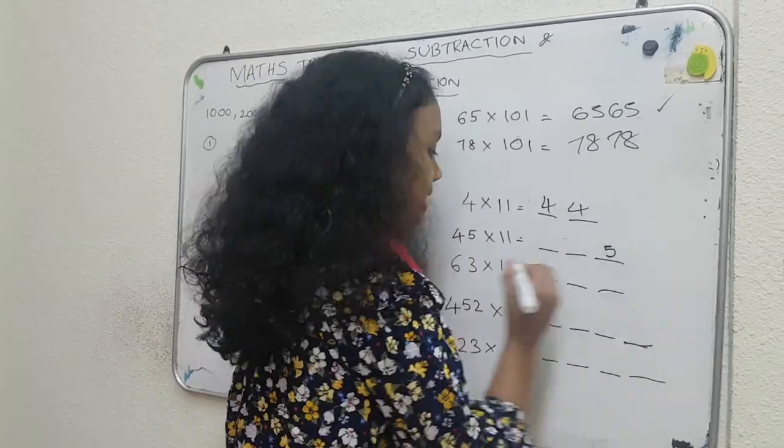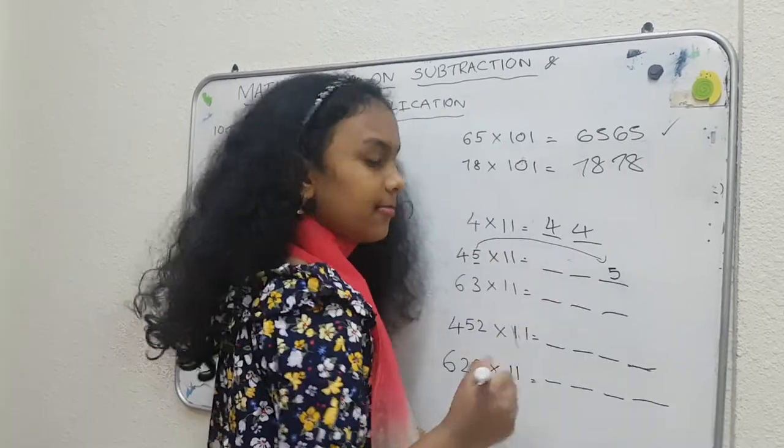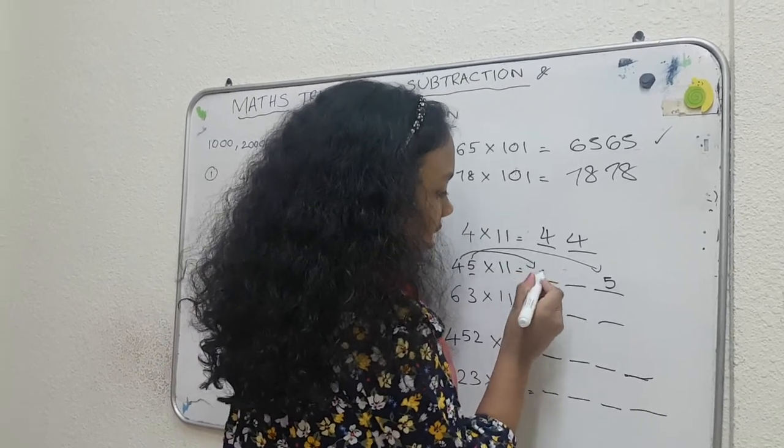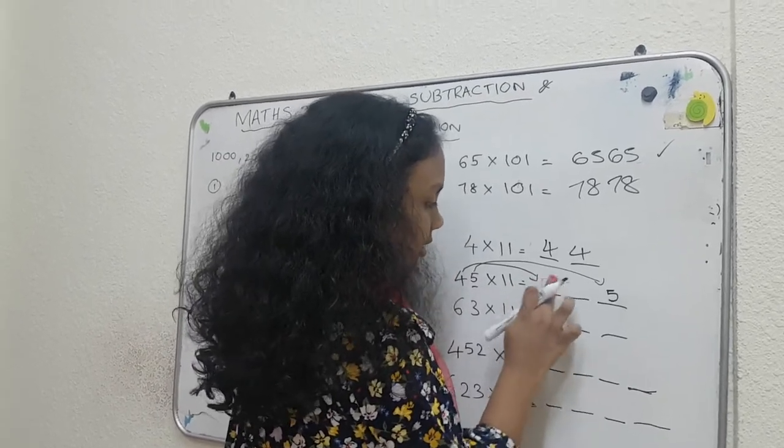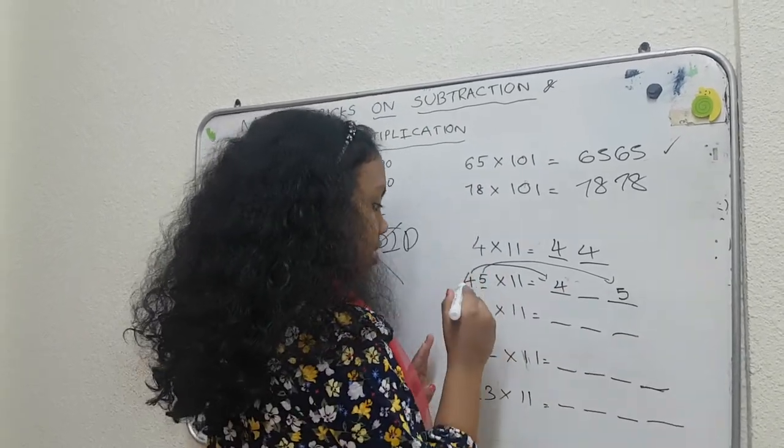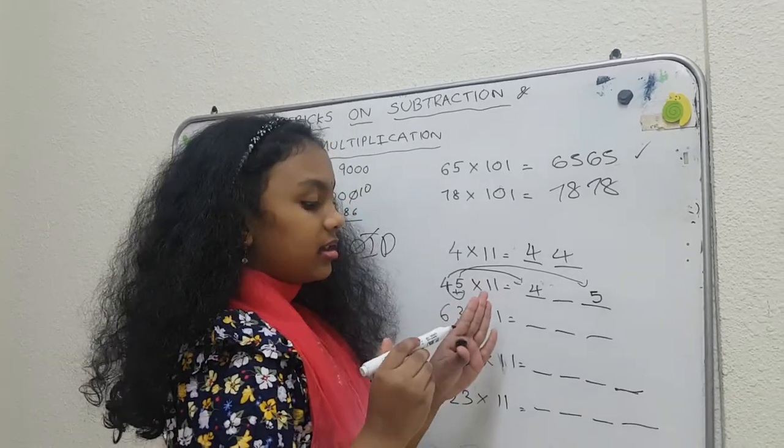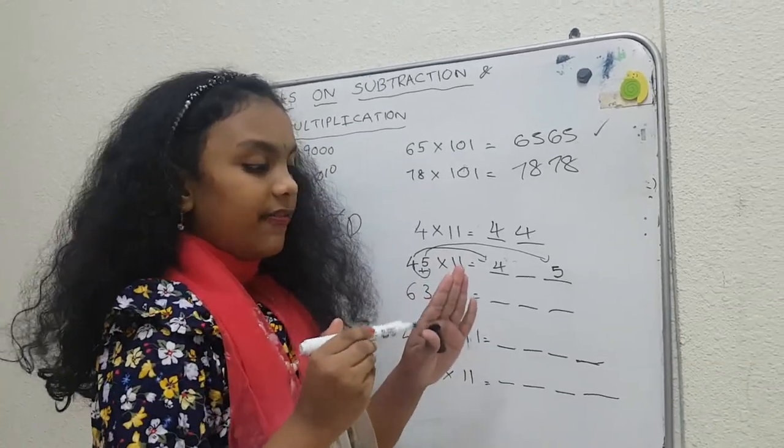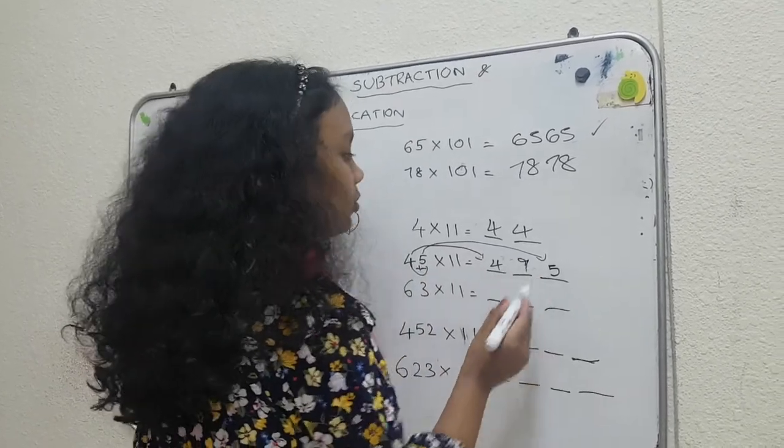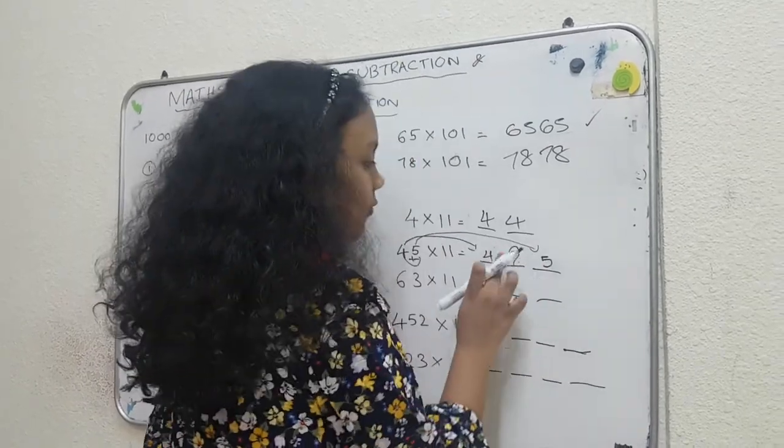Put 5 in the ones place. 4 to the hundreds place. And then, you have to now add. 4 plus 5? 5, 6, 7, 8, 9. See? You don't need to count it. I know already. So, just for you, I counted it. 495.